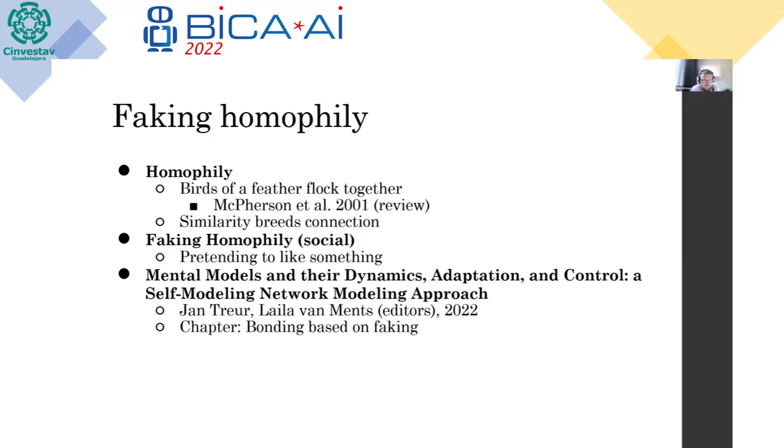This feature one could also use and fake it. So for instance, if you like someone but they have a certain hobby that you don't like, you can fake that you like it to still create this homophily and still create this connection. For this paper, our main source was 'Mental Models and Their Dynamics, Adaptation, and Control,' which is a book by Jan Treur, our professor, and Lula Mens, and we use the chapter on bonding based on faking.